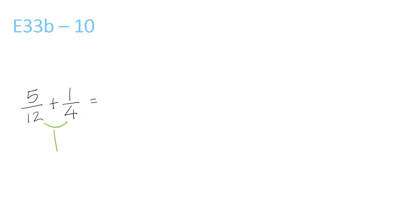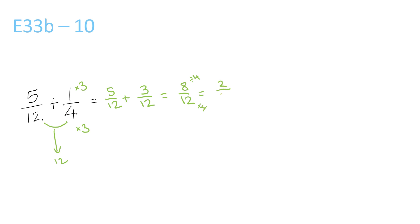12 and 4 both go into 12. 4 times 3 is 12, but we just keep the 5 over 12 the same. Plus the 1 over 4, we have to times the top and bottom by 3, giving us 3 over 12. So 5 plus 3 is 8 over 12. This can be simplified because the top and bottom can be divided by 4, to get 2 over 3.